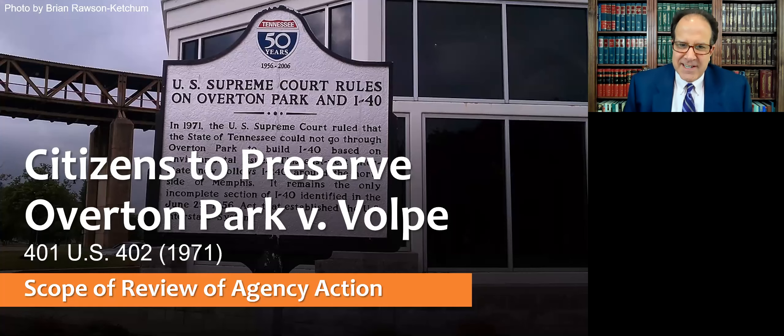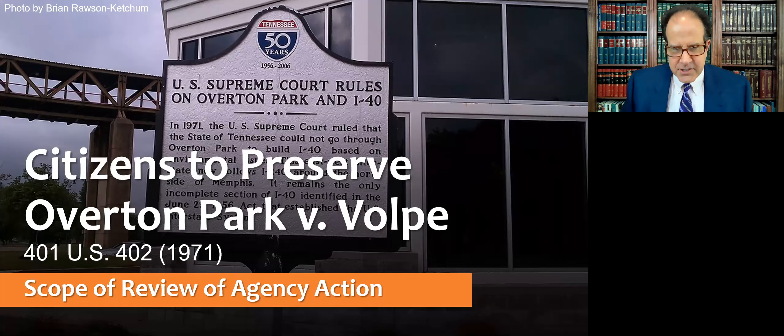I'm Drew Stevenson, and this is a lecture about the administrative law case Citizens to Preserve Overton Park v. Volpe. We usually just call this the Overton Park case. This is a U.S. Supreme Court decision from 1971 about the scope of review of agency action. This is one of the most important cases in administrative law — it's in almost every administrative law casebook. In fact, some casebook authors refer to it as the Marbury v. Madison of administrative law.